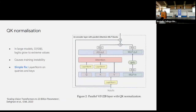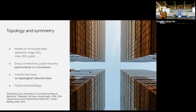Another useful transformer trick is QK normalization, introduced in the ViT-22B paper training a vision transformer with 22 billion parameters. At that scale, attention logits grow to extreme values causing training instability. The fix is simply to apply layer norm to the queries and keys — that's it. I found this to be a very elegant analysis and an elegant solution.